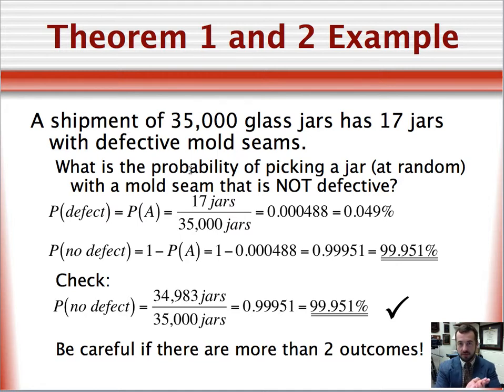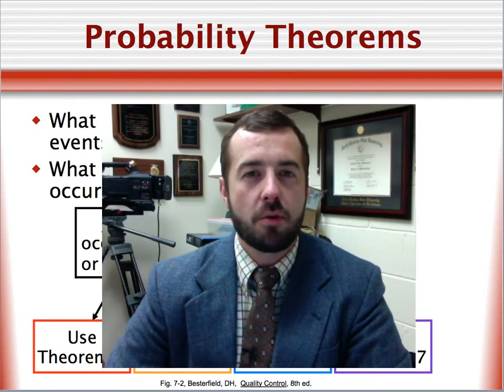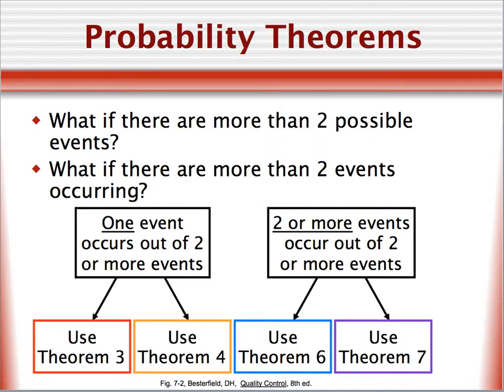Before moving on to the next theorems, it's appropriate to learn where they are applicable. In this figure, we can see that if the probability of only one event is desired, then theorems three or four apply, depending on whether the event is mutually exclusive or not. If the probability of two or more events is desired, then theorems six or seven are used, depending on whether the events are independent or not. Theorem five is not included in the figure, since it pertains to a different concept.